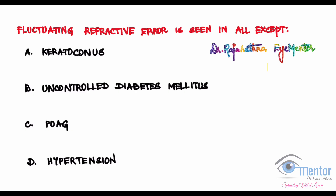This particular question was asked by one of my students to be clarified. Read the question: 'Fluctuating refractive error is seen in all except.' Two things you have to remember when you go to the options — fluctuating refractive error 'all except' means 'not seen in.' Let's go about the options.